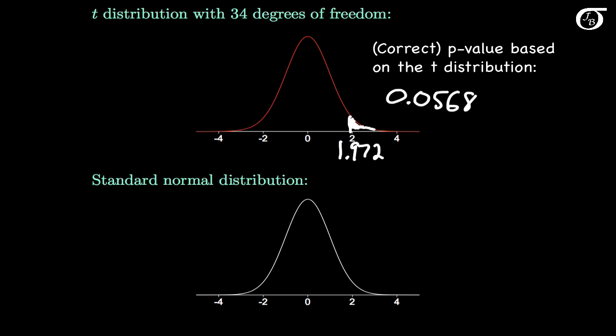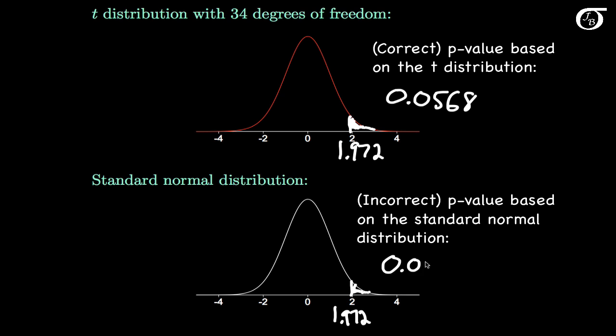Had we said our sample size is greater than 30, so let's use the standard normal distribution instead, and plugged in our test statistic of 1.972, we would have found the incorrect p-value based on the standard normal distribution of 0.0486. That's a little bit smaller than the correct p-value based on the t-distribution. Granted they're fairly close, but that difference is a meaningful difference. Using the standard normal distribution to find the p-value would be overstating the evidence against the null hypothesis. This difference will get smaller as the sample size gets larger, but we might as well use the correct distribution.